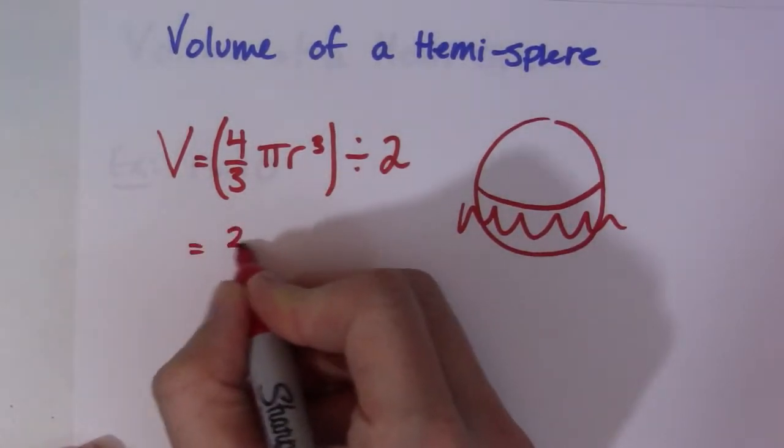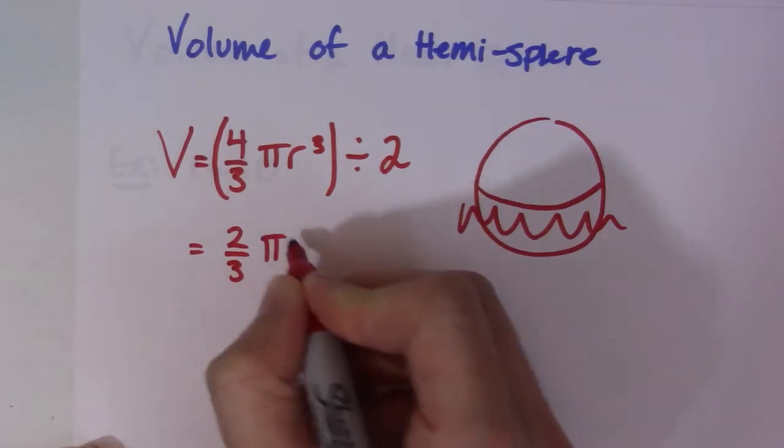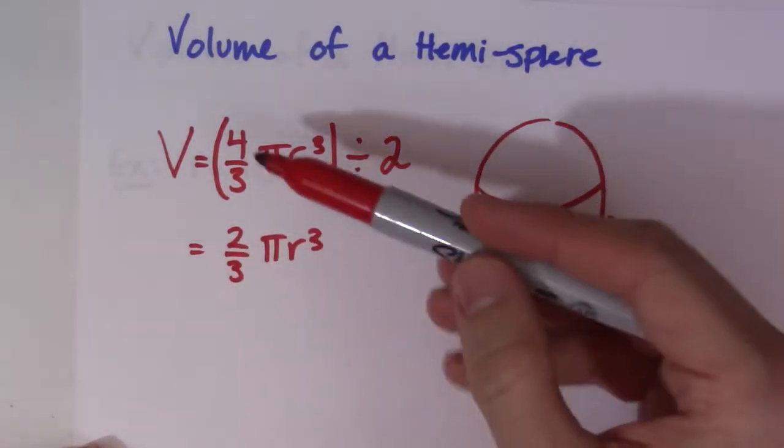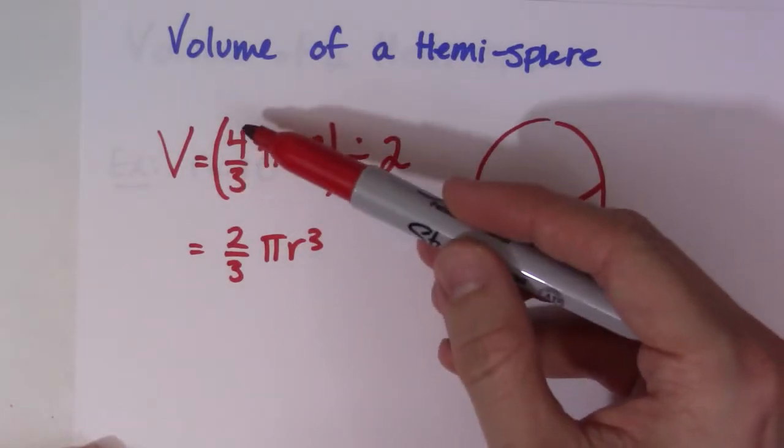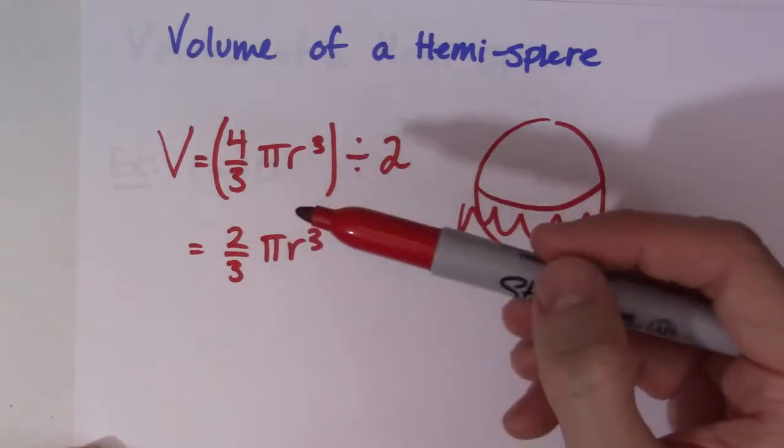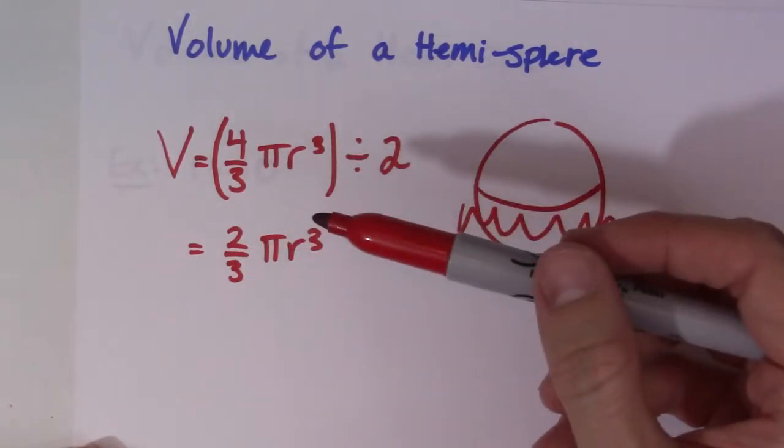Some people prefer this formula: two over three pi r cubed. That will get you the volume of a hemisphere as well. It's half of this fraction—half of four thirds is two thirds. Divide that four by two, which gives you two over three. Either one of these ways is perfectly fine.